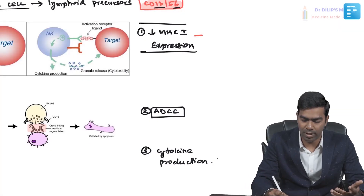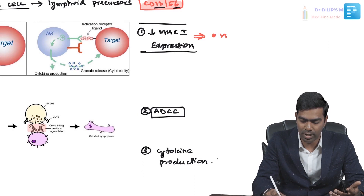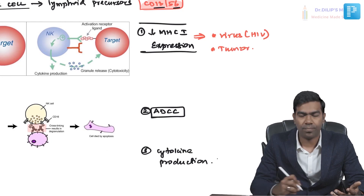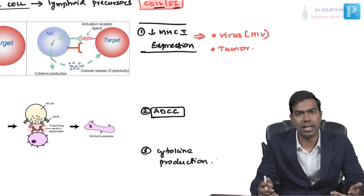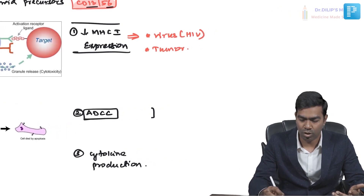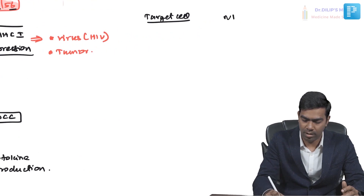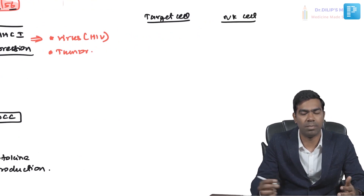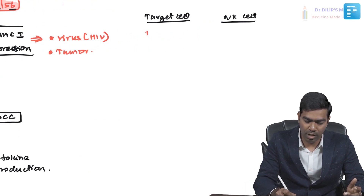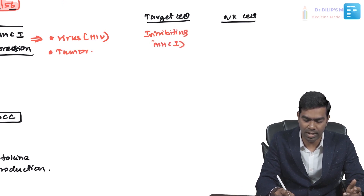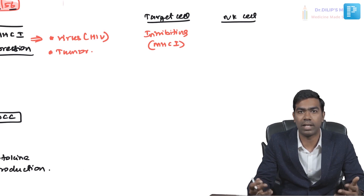Cells with reduced MHC class 1 expression indicate either a virus-infected cell like HIV, a tumor cell, or another abnormal cell — which is why identifying and killing them is really important. The target cell and the NK cell interact through receptors that either activate or inhibit the NK cell. The key inhibitory signal on the target cell is MHC class 1: if it is present, it inhibits the NK cell so killing does not happen.